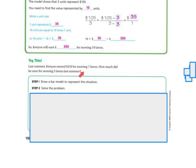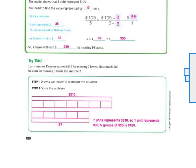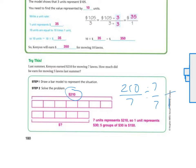Last summer, Kenyon earned $210 for mowing seven lawns. How much did he earn for mowing five lawns last summer? First we draw a bar model to represent the situation — seven lawns for $210. Then I divide the top and the bottom by 7 to get the unit rate. Seven goes into 210 thirty times, so for every one lawn it was $30.